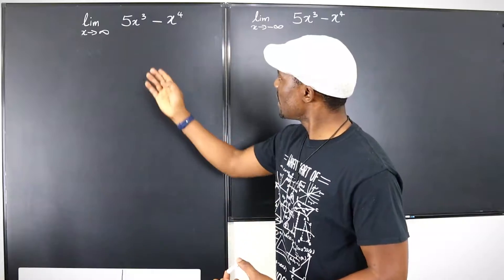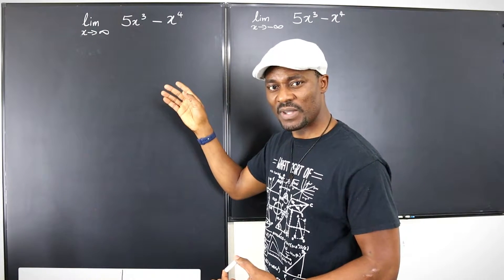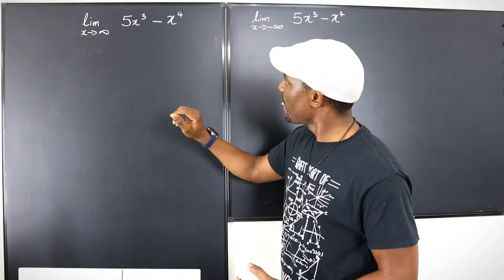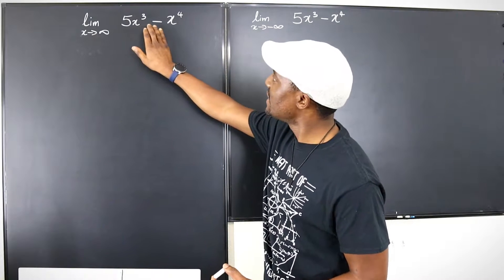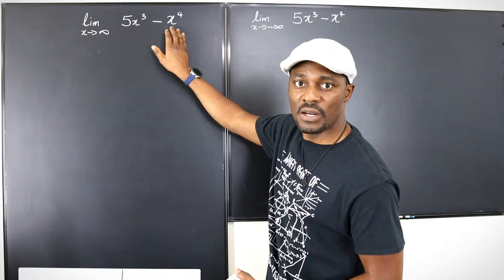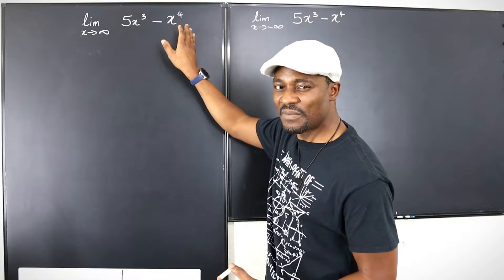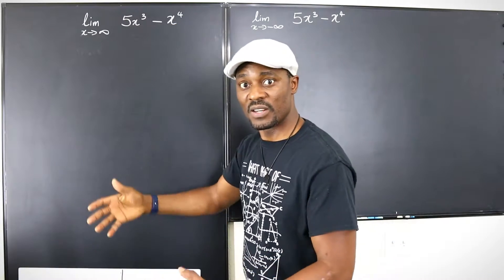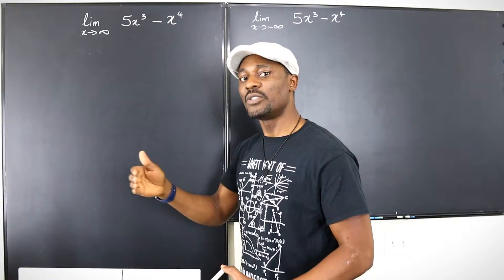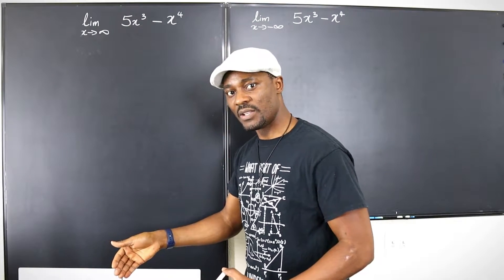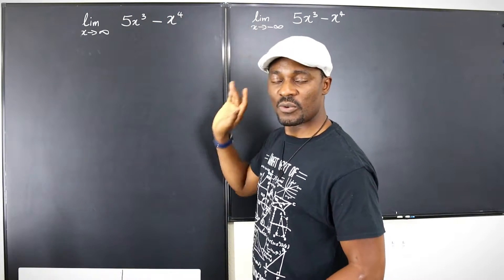If you cannot subtract, can you add infinity to infinity? Infinity is a very large number, and adding a very large number to another very large number will definitely give you a very large number. So yes, we can add infinity to infinity — if the sign is plus, your answer will be infinity.